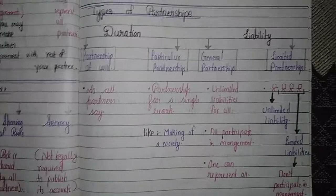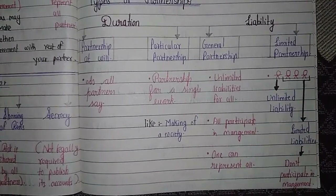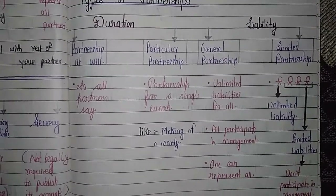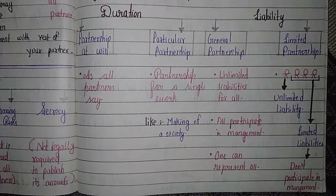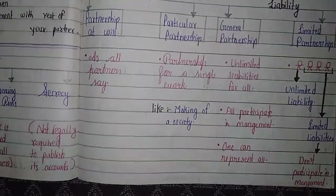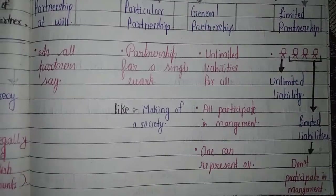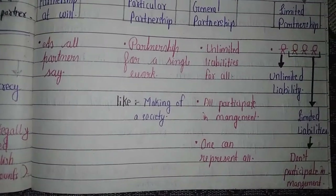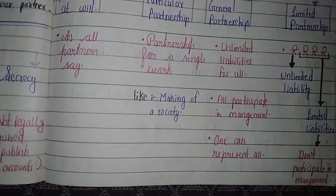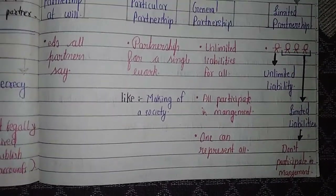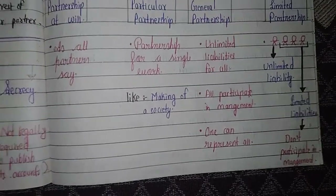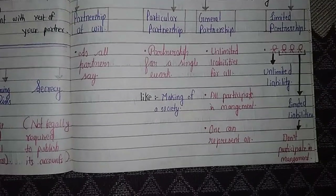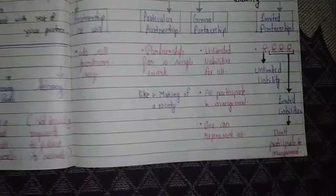General partnership includes all the standard features of a partnership firm — all partners have unlimited liability, all participate in management, and one partner can represent all. In a limited partnership, at least one partner must take on unlimited liability while the rest have limited liability. Partners with limited liability cannot participate in day-to-day management.